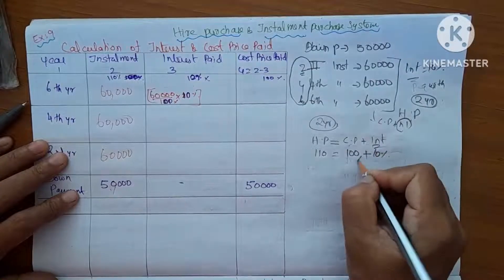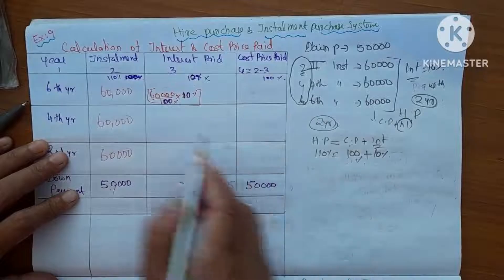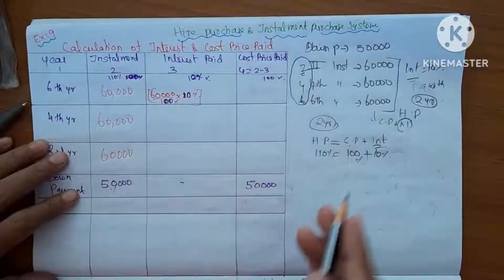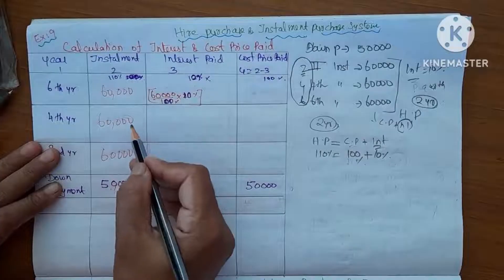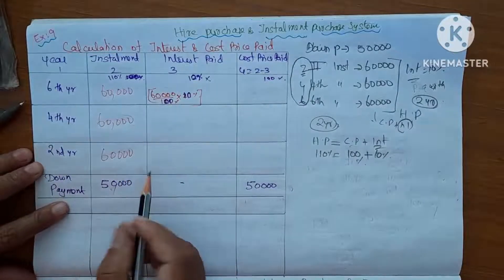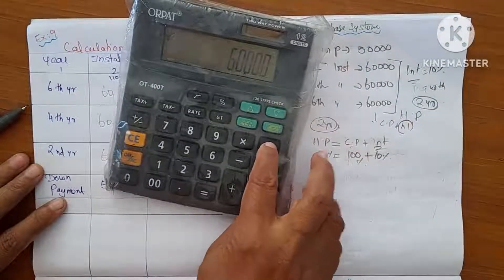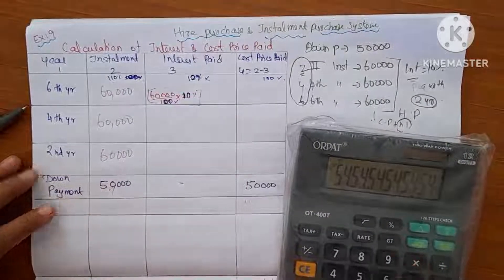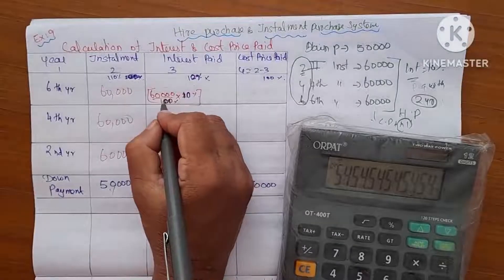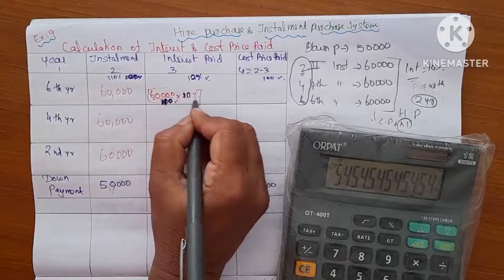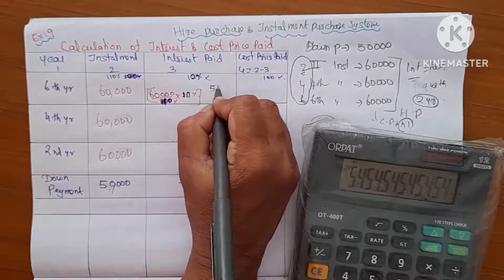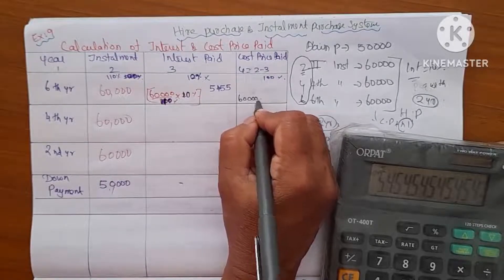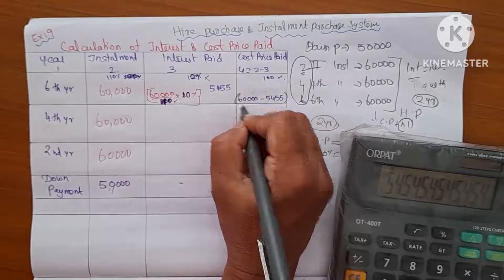Since higher purchase price is 110%, interest is 10%, and cost price is 100%. For the first installment of 60,000, the interest is calculated as: 60,000 divided by 110 multiplied by 10, which gives us 5,455.